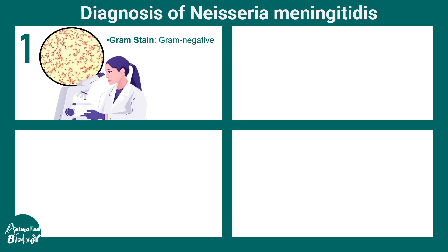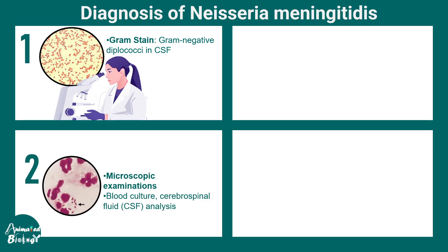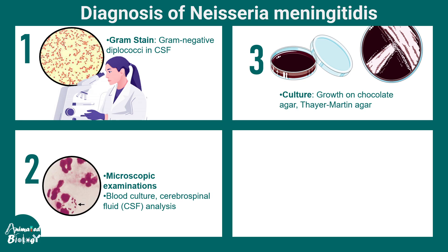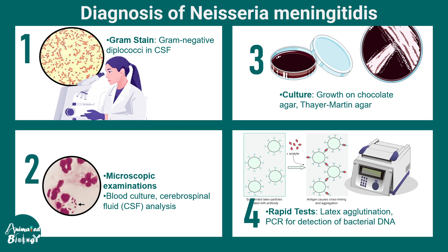Diagnosis of Neisseria meningitidis can be done using gram staining — one can easily spot those diplococcus-like appearance in the cerebrospinal fluid. Microscopic examination of the CSF and blood cultures are also used. In the CSF there are altered characteristics, with increased neutrophils alongside the bacteria. They can be grown on chocolate agar but not blood agar, which has inhibitory substances. Thayer-Martin agar is more selective, containing an antibiotic cocktail for selective growth. PCR-based tests and latex agglutination tests can also be used for diagnosis.